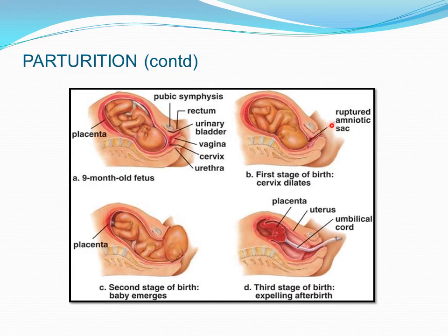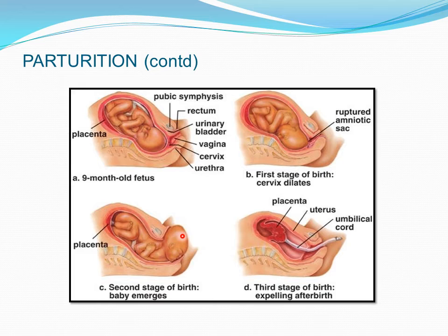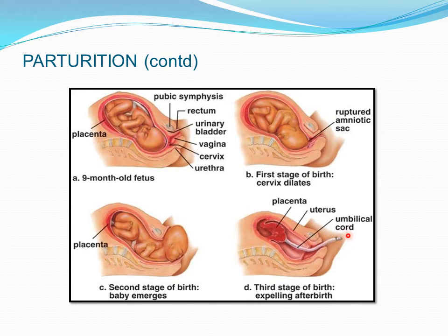As the amniotic fluid comes out, the baby is pushed out by the uterine contractions. In the second stage, the baby emerges — the head comes out through the cervix and passes through the vagina, completing the baby's birth. In the third stage, after childbirth, the umbilical cord is tied and cut.